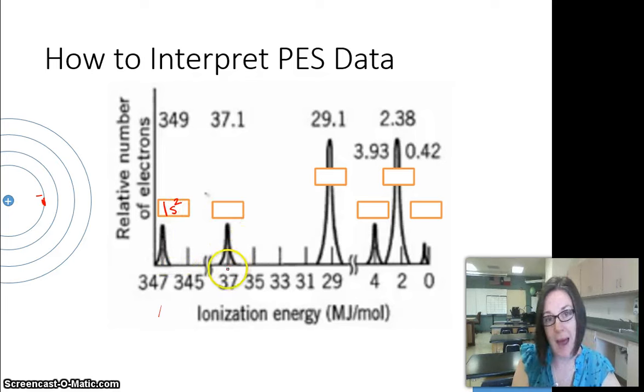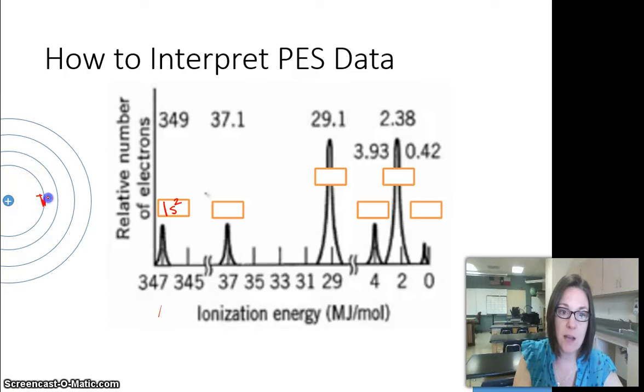Since we've moved past the first energy level and we have higher peaks, that means we've filled this up with 1S2. And then our next peak is going to be on the second energy level. It's the same height, so that means it's going to be an S-sublevel with two electrons in it.